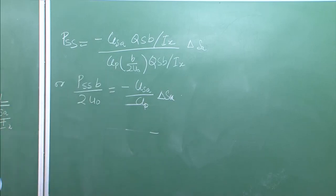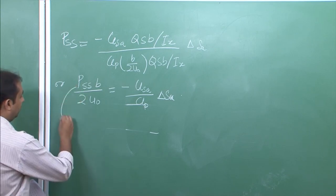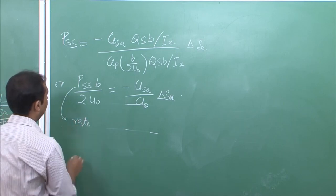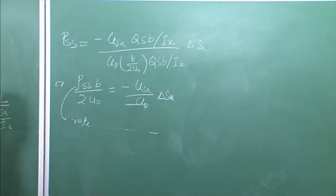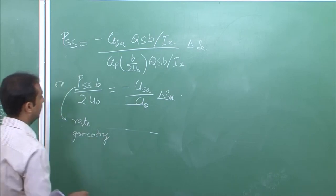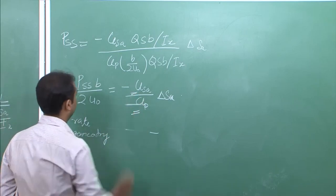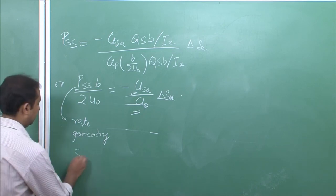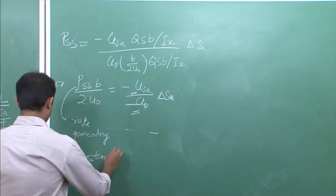Now, if we measure the roll rate from instrumentation — easily done using rate gyros — and knowing the geometric dimensions of the aircraft, we can easily obtain the values of C_L_delta_A and C_Lp. This is a very good method of finding the aerodynamic derivatives of an aircraft using the measured steady-state value. This technique of deriving aerodynamic derivatives from measured values is known as system identification.